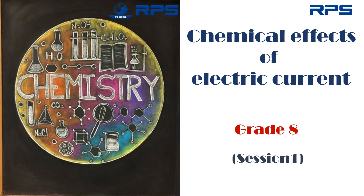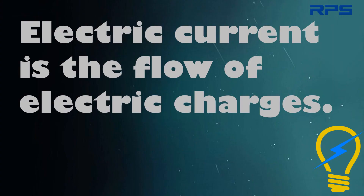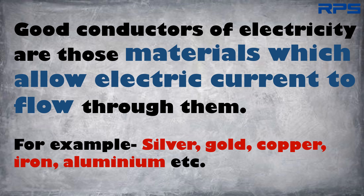In the previous classes, you have studied electric current. Electric current can be defined as the flow of electric charges. You have also studied about good conductors and poor conductors of electricity. Good conductors of electricity are those materials which allow electric current to flow through them — for example, silver, gold, copper, iron, and aluminium.